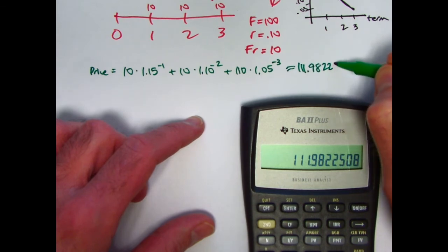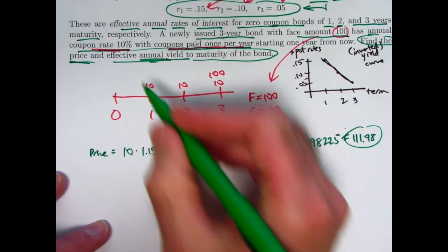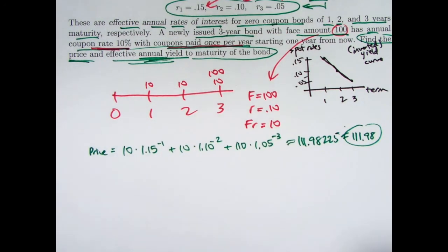I'll carry a few more decimal places, but of course, in practice, we'd round this to 111.98. That will be the price. Okay? So that's the first thing. Now we want to find the effective annual yield to maturity.